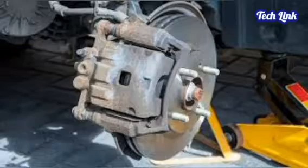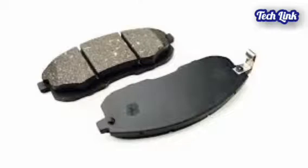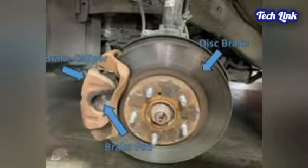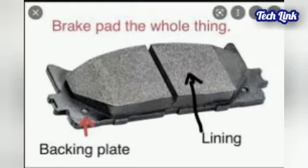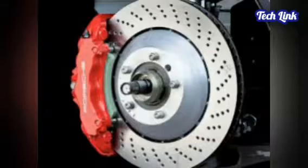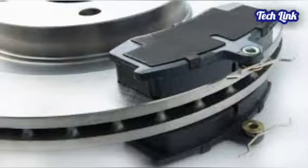Disc brakes are the most popular type of technology used in cars. The brake pad's material wears down over time because of the constant friction and heat. Eventually, you'll have to replace them if you want them to operate properly. Compared to drum brakes, the cooling period for a disc pad is often shorter, resulting in superior stopping power.